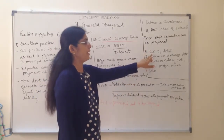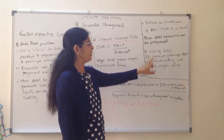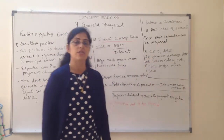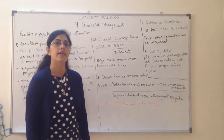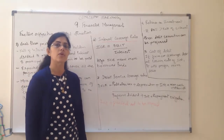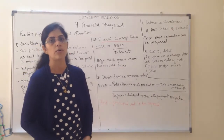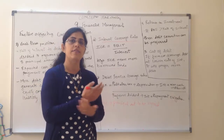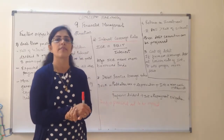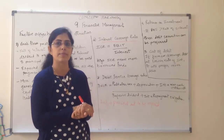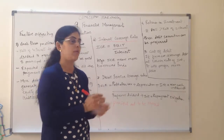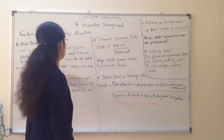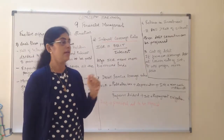Next is cost of debt. If a firm can arrange borrowed funds at a lower rate of interest, then more borrowed funds are preferred because the company knows it will be able to repay the amount. All the factors, if you see, are actually rotating around the cash flow position.